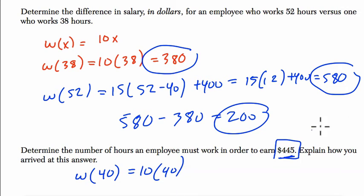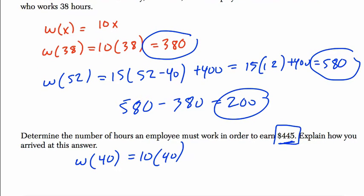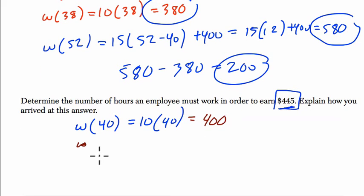Alright, so if you plug in 40, the highest value in this interval, what we get is 10 times 40 or 400. So we haven't reached 445, so we try the next category. So we're going to use this equation, the next equation, which is 15 times X minus 40 plus 400. And we want to know, when does this equal 445? Let's solve for X.